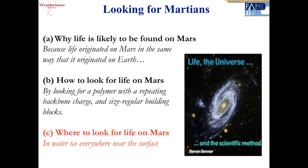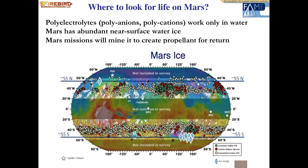How to look for life on Mars: by looking for a polymer with a repeating backbone charge and size-regular building blocks. This solves all the problems with looking for metabolism, cell structures, or other biosignatures. Minerals have structures that look like cells; metabolism is a chemical reaction that can occur without life. But here, you're looking at molecules necessary to support Darwinian evolution. Where to look for life on Mars: water ice, which is everywhere near the surface — it's essentially everywhere all over the planet.